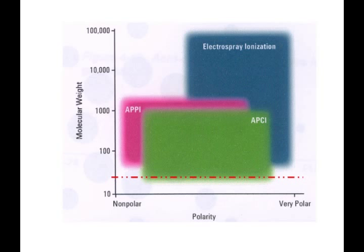Let's look first at atmospheric pressure chemical ionization. And one of the first things that we'll notice about atmospheric pressure chemical ionization is that it's a small molecule technique. We need to keep the molecular weight of the analyte somewhere below 1,000 Daltons.